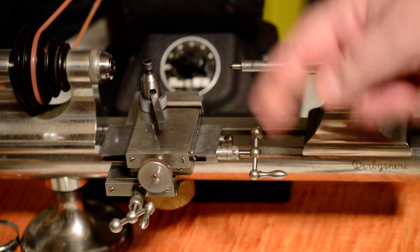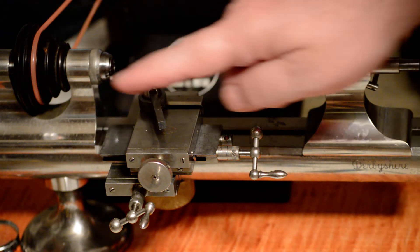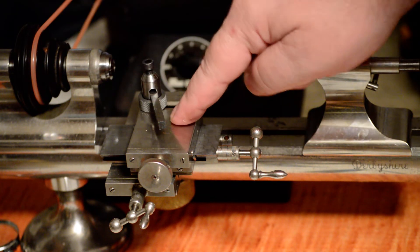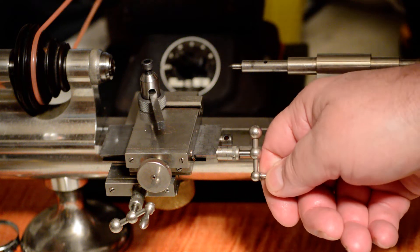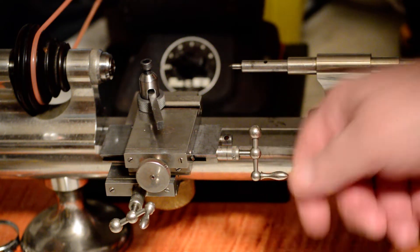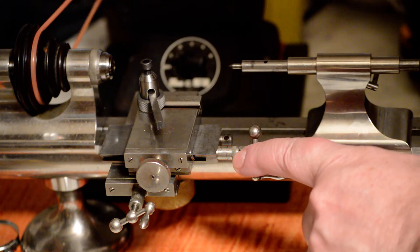...that means that this slide moved that way 25 thousandths of an inch directly. So I want to go 25 thousandths, there it is, another 25, there it is. So that's a direct reading scale, zero to 25.